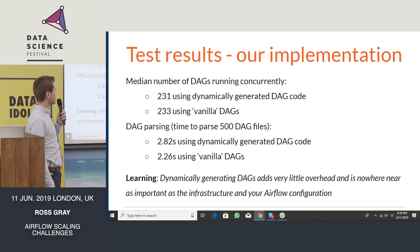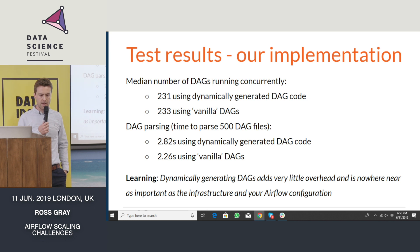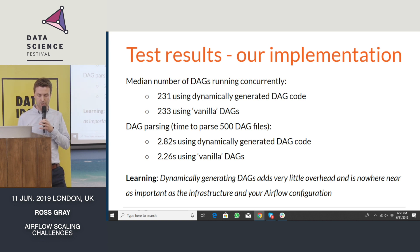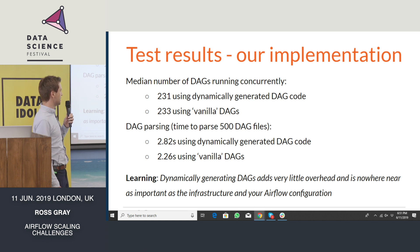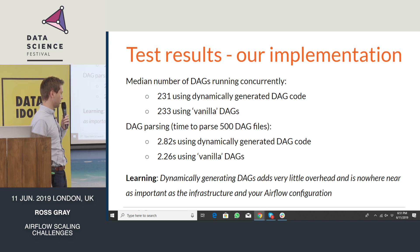Secondly, testing our implementation: we again tried to run 500 DAGs concurrently on a machine similar to our production machine, and it became very clear that running DAGs that did real-world work was very different from running DAGs which did nothing but sleep. In this case, we couldn't run 500 concurrently — we got up to 233. The other key takeaway was that our implementation of generating DAGs dynamically didn't add much overhead at all — a very minimal amount. It was definitely not as large as the difference we found when we scaled the infrastructure and made modifications to the Airflow config, which made a far bigger difference.